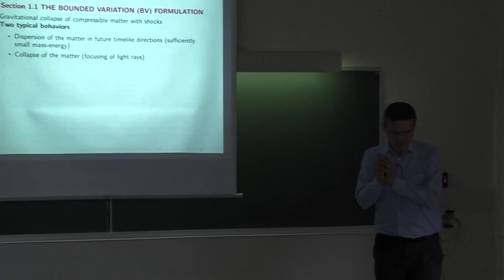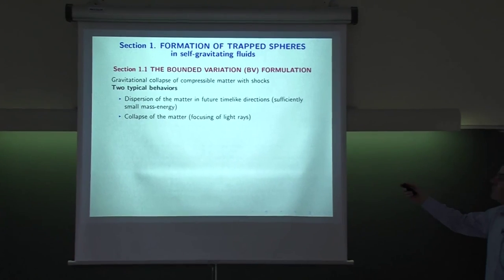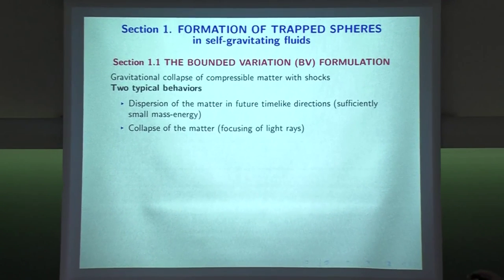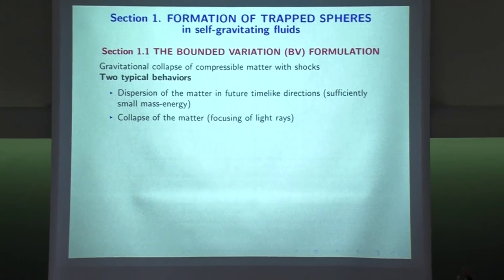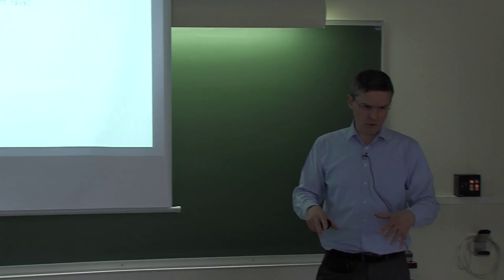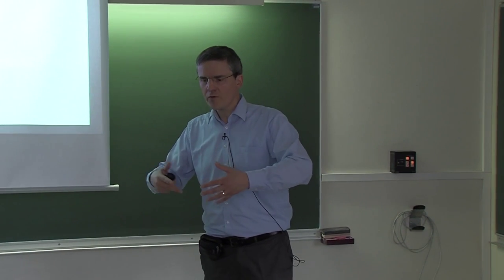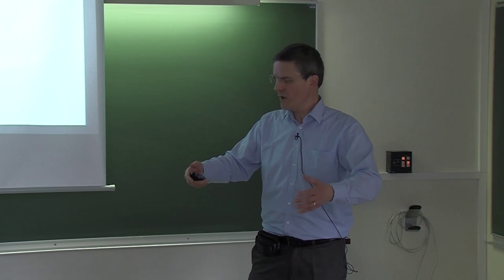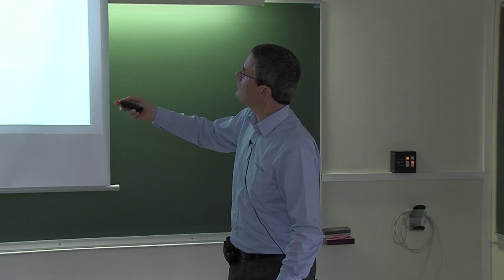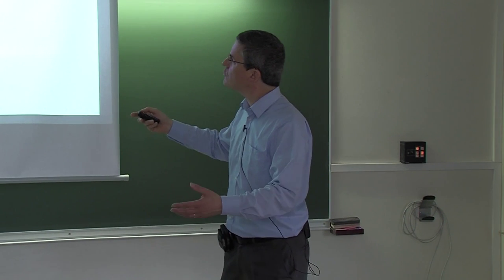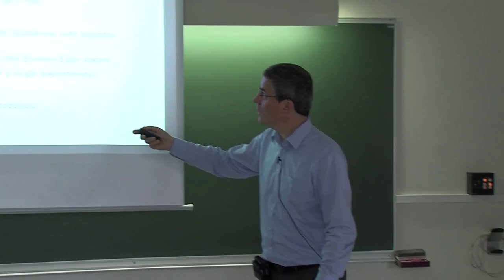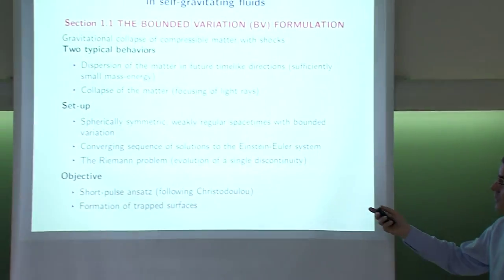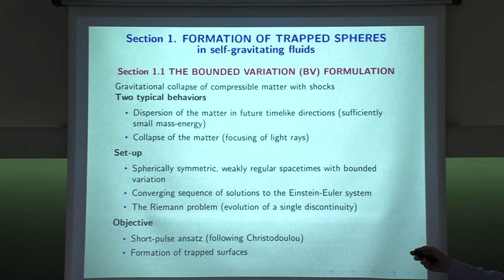Let's begin with the formation of trapped spheres. This is the continuation of the previous chapter where we already introduced a setup of spacetime with bounded variation. We were able to prove the existence of Cauchy developments from some initial data set with weak regularity, and what I would like to do now is say something more about the geometry of your spacetime. Specifically, at this level of regularity and in presence of matter and shocks, we have a collapse — this generic feature of collapse of matter and focusing of light rays.